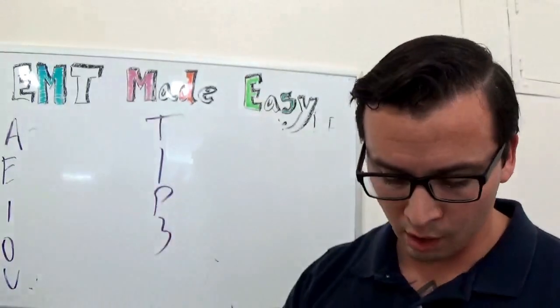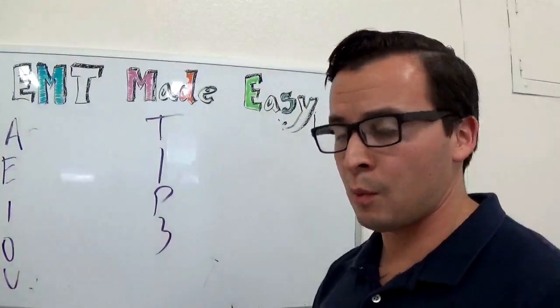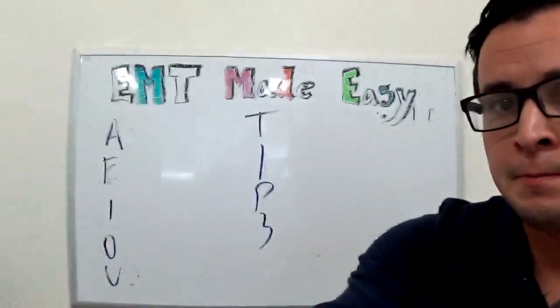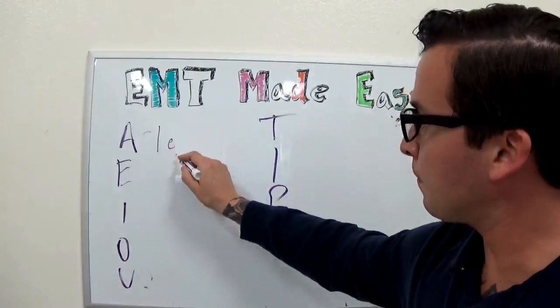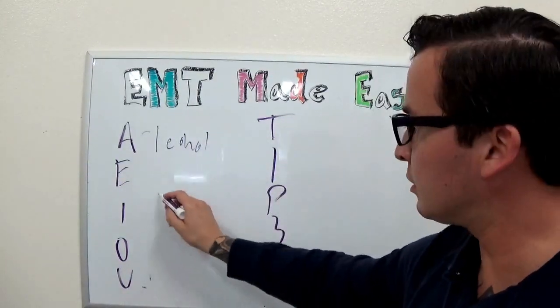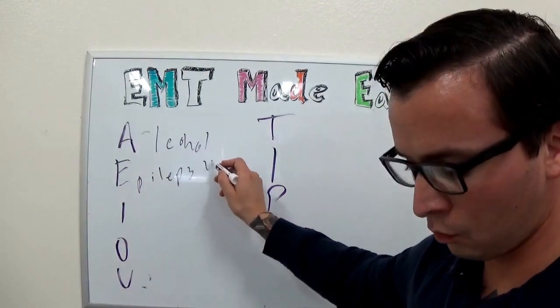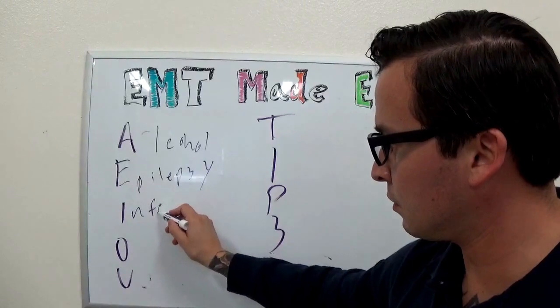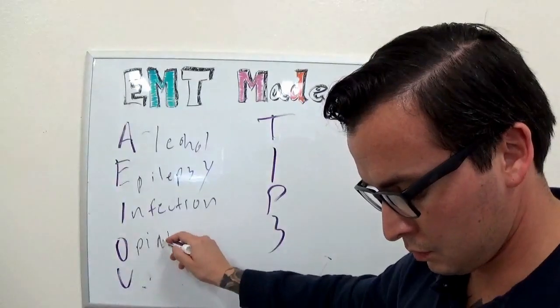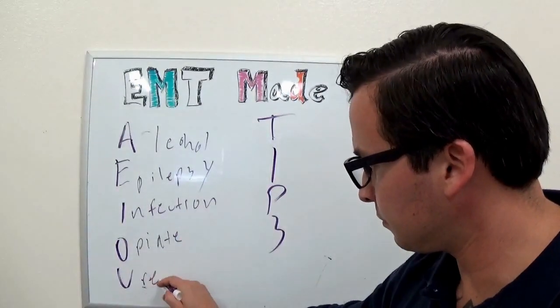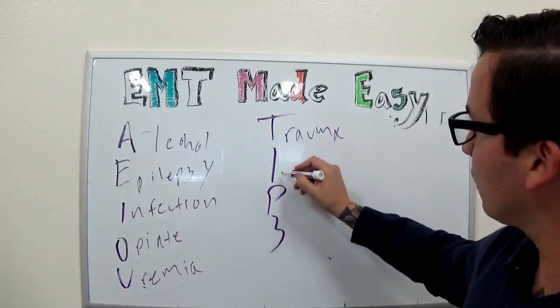So AEIOUTIPS. So these stand for alcohol is the first one. Your instructor might say something differently, depending on where you live, everybody uses this in a different format. So this stands for alcohol, this stands for epilepsy, and I'm going to go really fast here. This stands for infection, this stands for opiates. Uremia, trauma, insulin.